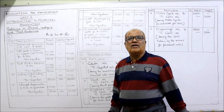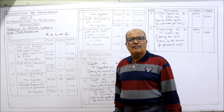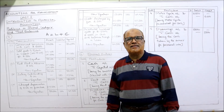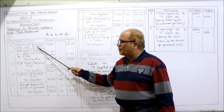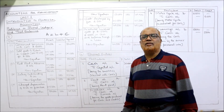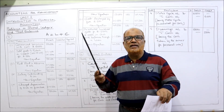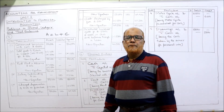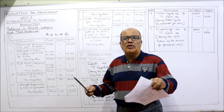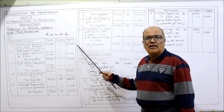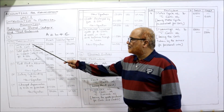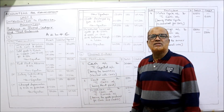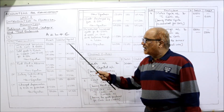First transaction: commenced business with cash 50,000. Business started with 50,000 means cash is coming in. Cash is an asset, so assets will increase by 50,000. There is no liability because the owner is bringing this cash — that is called capital. The effect: assets increase by 50,000 and capital increases by 50,000.